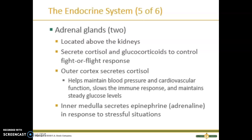There are two adrenal glands, located above the kidneys. The secretion of adrenocorticotropic hormone (ACTH) by the pituitary stimulates the release of cortisol and the glucocorticoids to control the fight-or-flight response. The outer cortex of the adrenal gland secretes cortisol to maintain blood pressure and cardiovascular function, slow the body's immune system, and help maintain steady glucose levels. The inner medulla secretes epinephrine in response to stressful situations.